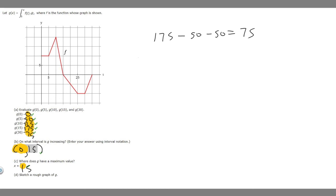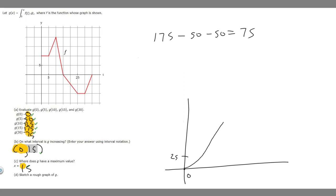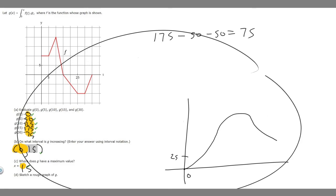If we were to sketch a rough graph of g, it would increase, curving upward, reaching a peak around 175 at x equals 15, then decreasing after that. That's the rough shape of g based on our calculations.